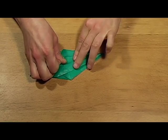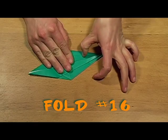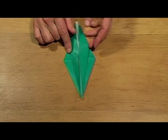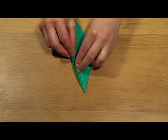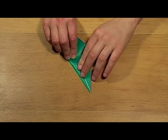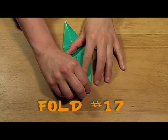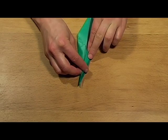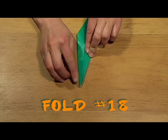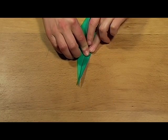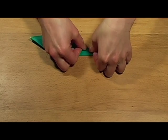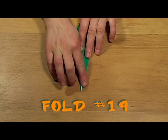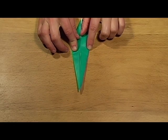Then you do the same thing on the other side. Flip it over, fold it in to the center line, but almost all the way, not completely. Flatten it. Same on the other side. And we only have a little bit left.